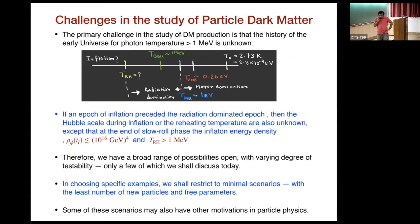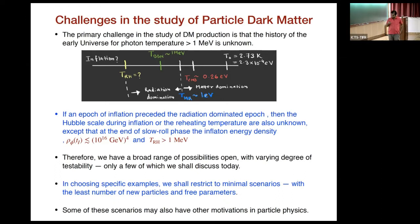It is challenging to study dark matter production in the early universe, primarily because the history of the early universe before a photon temperature larger than an MeV is unknown. From Big Bang nucleosynthesis considerations, we know the universe had a temperature of about an MeV, but whether it had a temperature higher than that is not known.